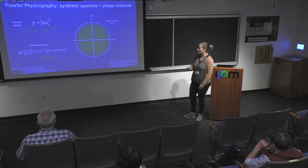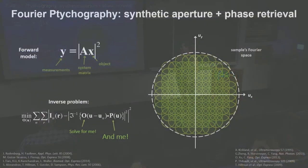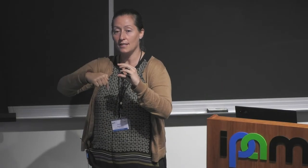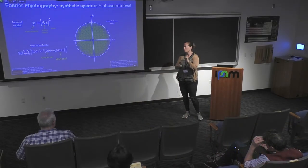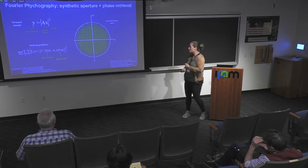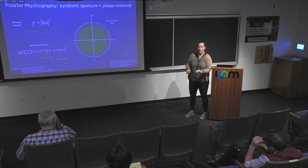Algorithmic self-calibration here means: we solve for the object and also for the pupil function p(u). We know the pupil is within a circular aperture, but maybe that circular aperture isn't exactly where it's supposed to be — biological samples sitting in liquid may refract light to a slightly different angle. We also solve for the wavefront within that circle, which is the aberration function. We then digitally undo the aberrations.